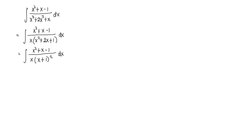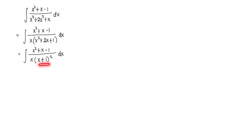We see that there are three factors in the denominator: the linear factor x, the linear factor x plus 1, and x plus 1 again — so x plus 1 is repeated twice. This means the problem is a combination of case number 1 and case number 2.